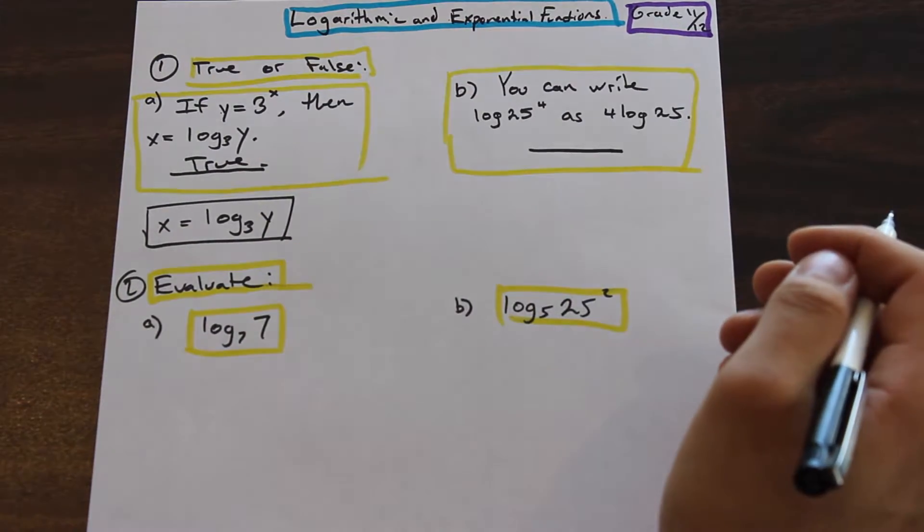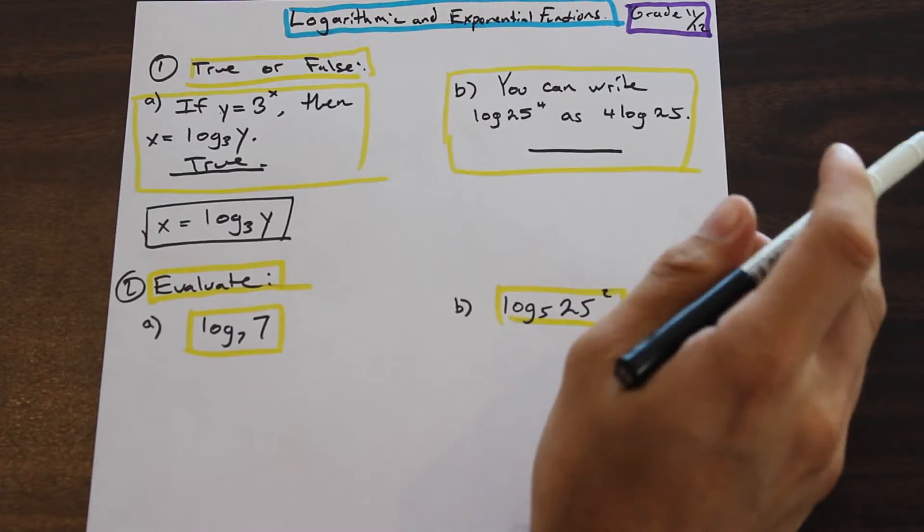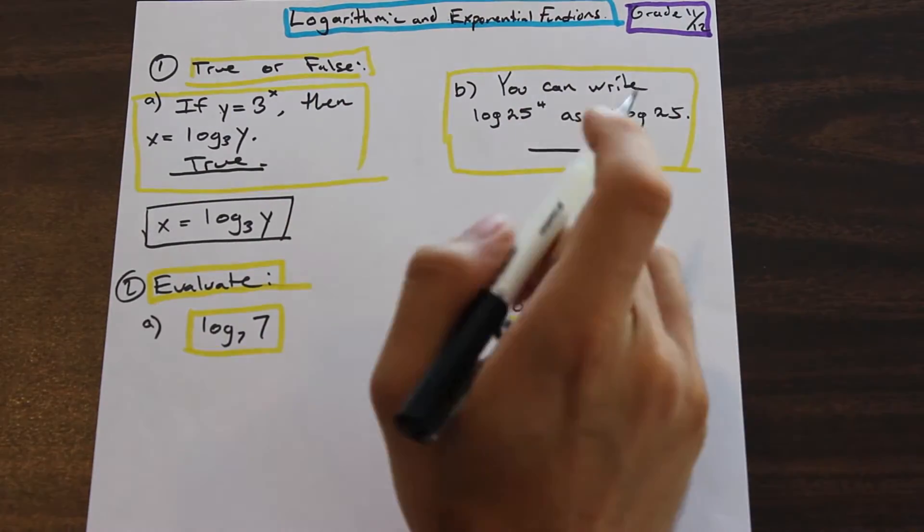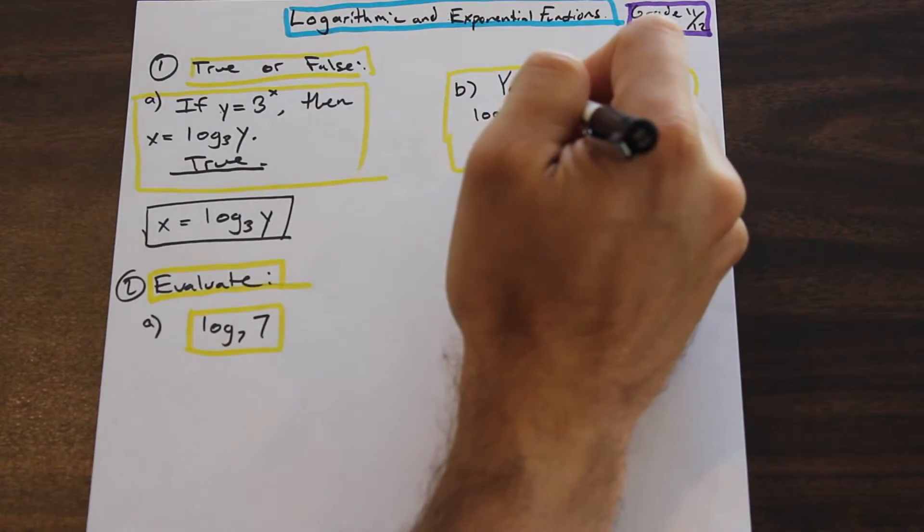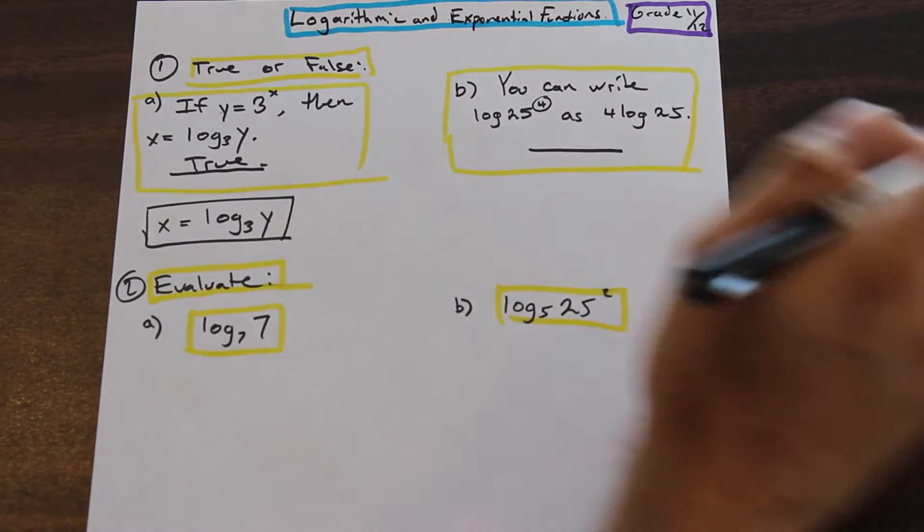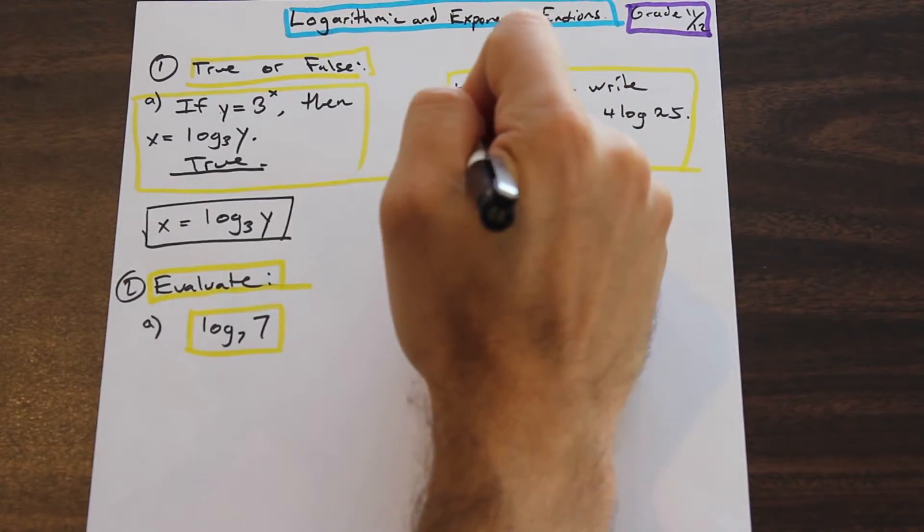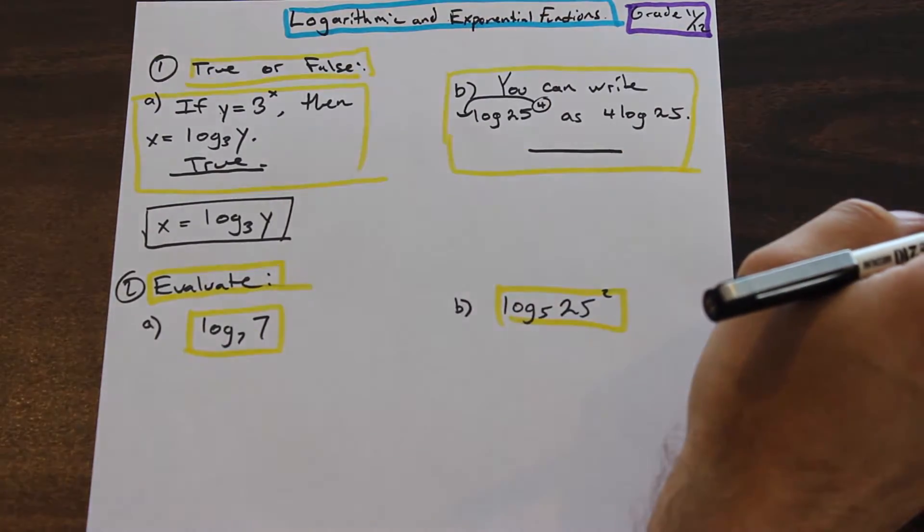You can write log 25 to the power of four as four log 25. Okay. Another property of logs - if you have log to a power like this, for four, you can take this power and move it down to the front of the function.